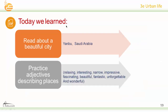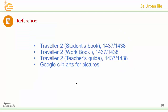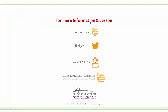Today we learned about a beautiful city — Yanbu from Saudi Arabia — and we practiced adjectives describing places: relaxing, interesting, narrow, impressive, fascinating, beautiful, fantastic, unforgettable, and wonderful. The references are Traveller 2 student's book, workbook, and teacher's guide. For more information and lessons, please visit our website, Twitter account, or phone number. Thank you, and hope to see you again. Wassalamu alaikum warahmatullahi wabarakatuh.